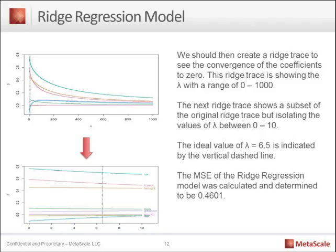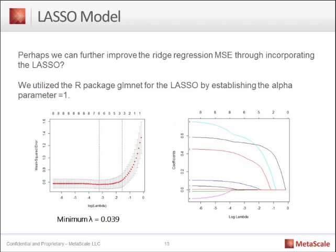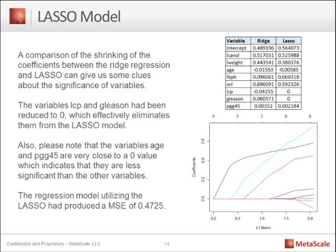A lasso model is like a ridge regression except it adds a penalty term to it, making it a more enhanced version. In the R open source platform, we can run this lasso model and look at a number of diagnostic parameters. The lasso actually eliminates some variables from our model — when it eliminates variables because they have less predictive performance, it's essentially performing variable selection. We run our lasso model and find that it has a mean squared error of 0.4725.